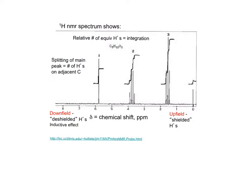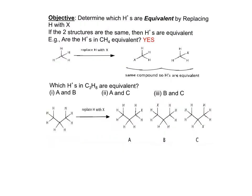This proton NMR spectrum shows three peaks. This fourth peak is a reference, so ignore this one. Note that these numbers show the area under each peak, which is the integration — it tells the ratio of equivalent protons in this compound. Also note that some of the peaks are split into smaller peaks. Rather than looking at an NMR spectrum to determine the structure, let's go backwards and look at the structure first to determine what the NMR spectrum looks like.